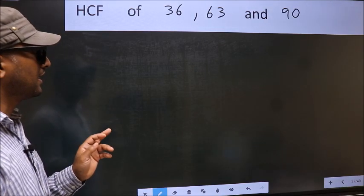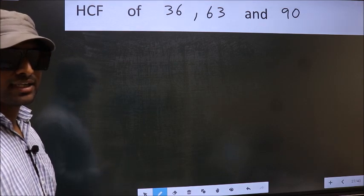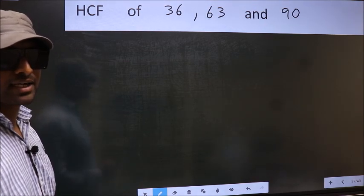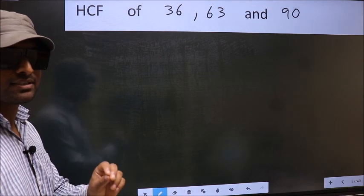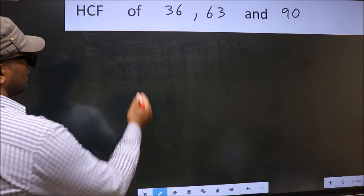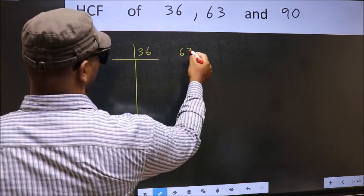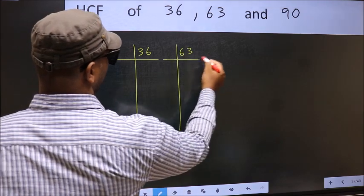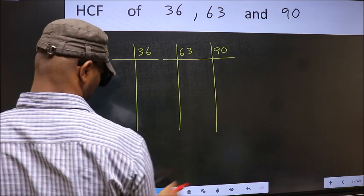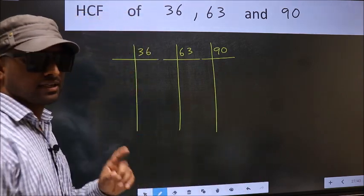HCF of 36, 63 and 90. To find the HCF, for that we should do the prime factorization of each number separately. What I mean is 36, 63, 90. This is your step 1.